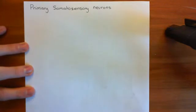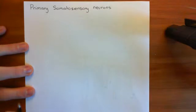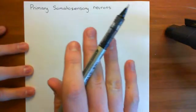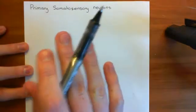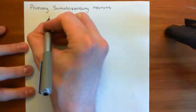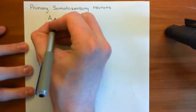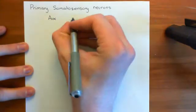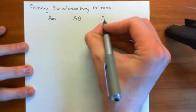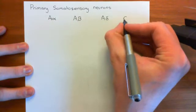Let's have a look at the classification of different primary somatosensory neurons depending on the size of their axons. We're generalising beyond nociceptors — we're looking at any primary somatosensory neuron. Basically, there are four categories of neurons: A-alpha, A-beta, A-delta, and C-fibres.